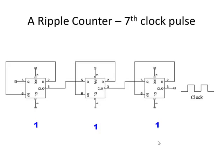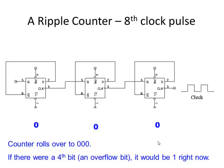Now the question is: what happens on the 8th clock pulse? In a regular ripple counter, on the 8th clock pulse, the counter just rolls over to 0. And that's how our timer counters work as well. If we had an extra bit — let's call it an overflow bit — it would be a 1 right now, acting as a 4th bit. If that's a 1, it indicates that the other 3 bits overflowed — we ran out of room. That's going to be important later, because we need to know whether this timer has timed out.